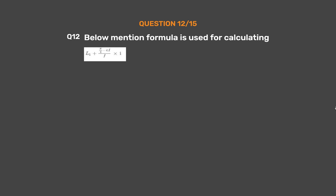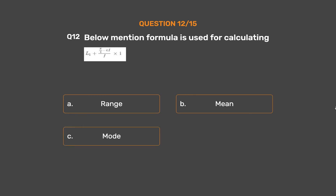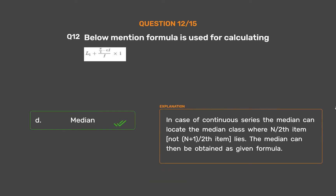Question number 12. The below-mentioned formula is used for calculating: Option A: Range. Option B: Mean. Option C: Mode. Option D: Median. The correct answer is Option D: Median. In case of a continuous series, the median class is located where the n/2th item lies, not the (n+1)/2th item. The median can then be obtained using the given formula.